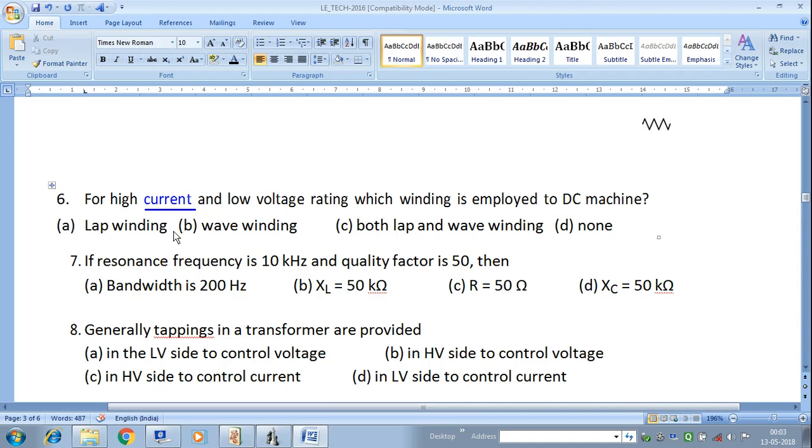As the number of parallel paths is more, the current is divided in different parallel paths. Therefore, the copper loss is less. So generally, the lap winding is used for high current, low voltage rating.